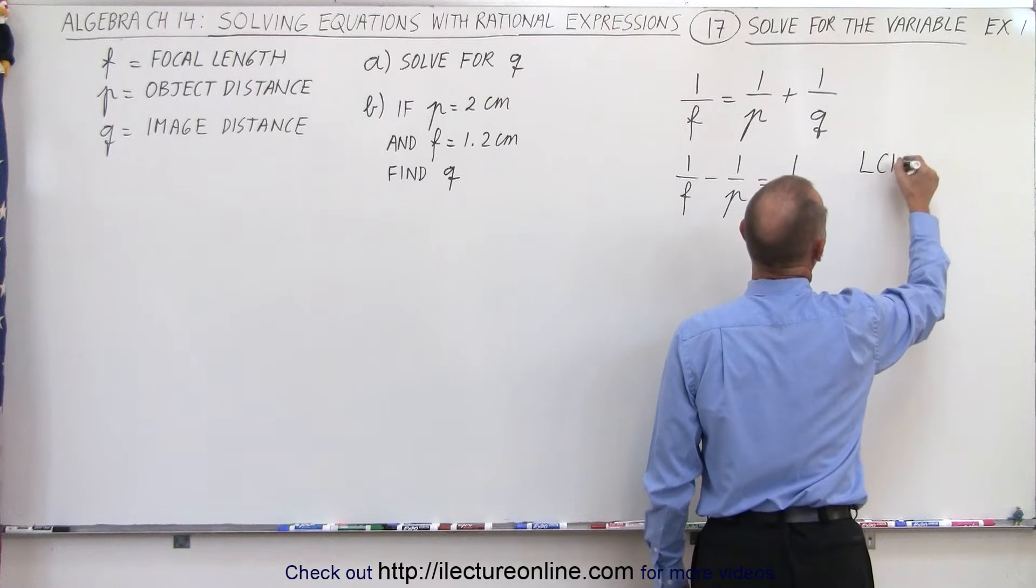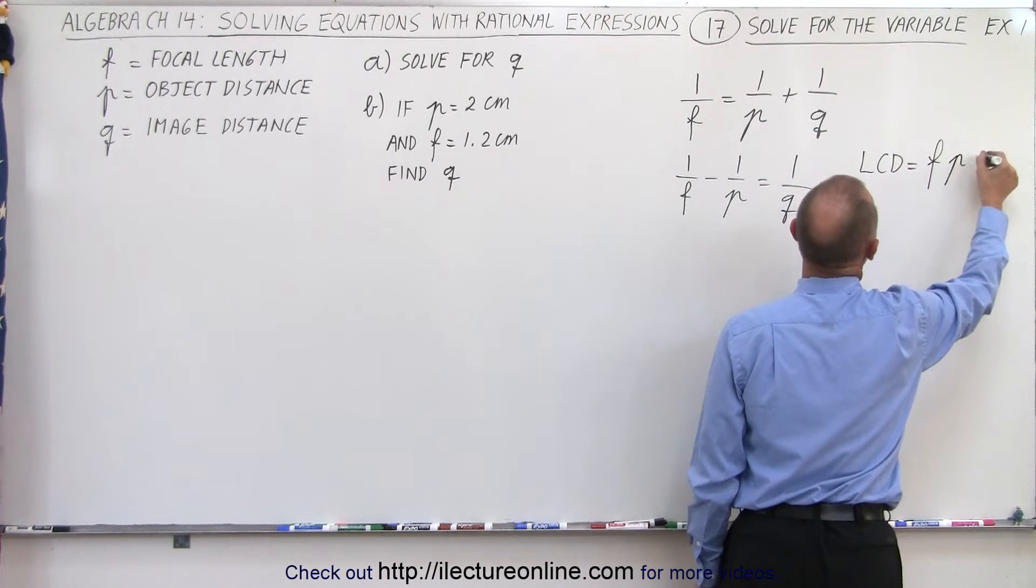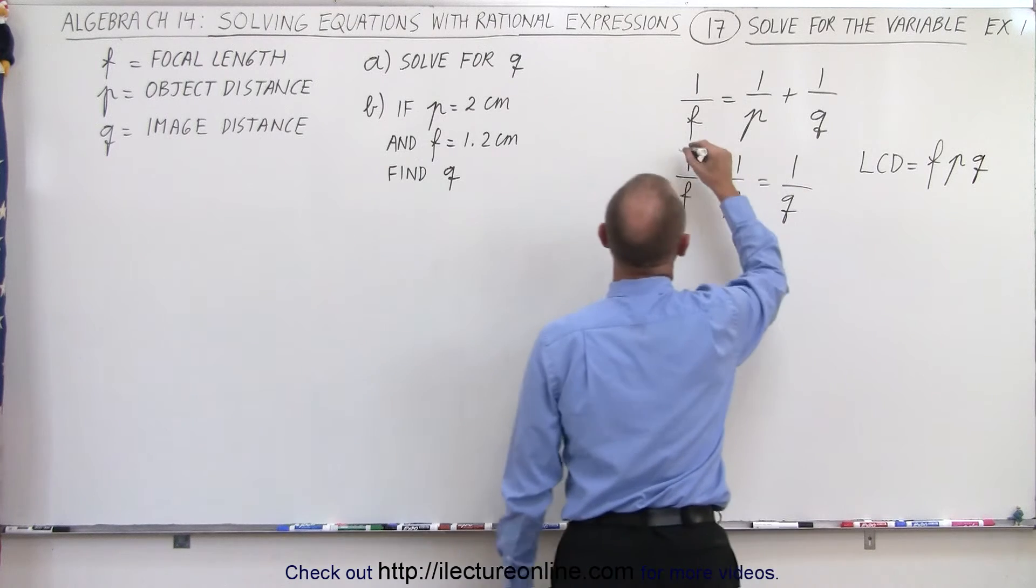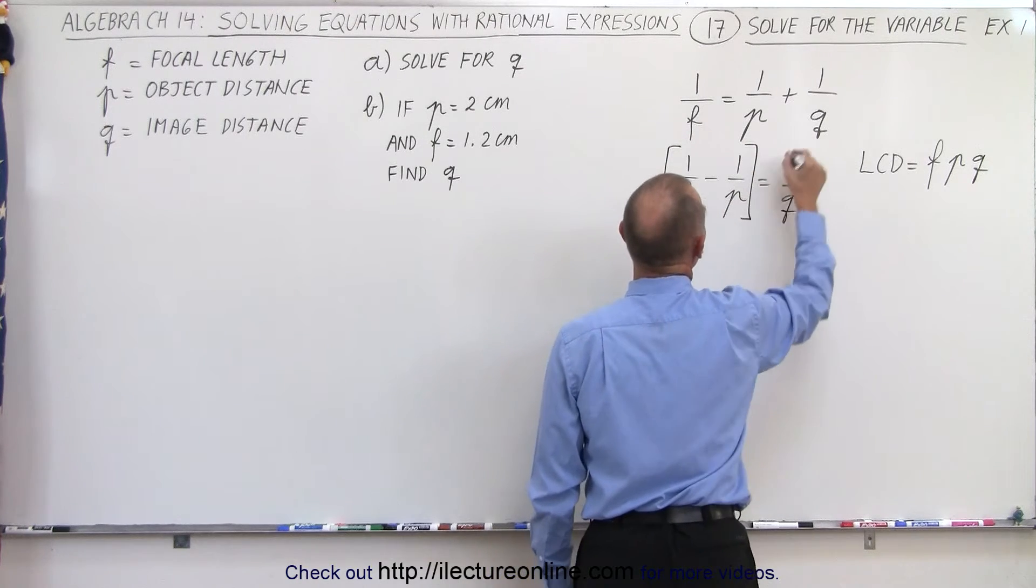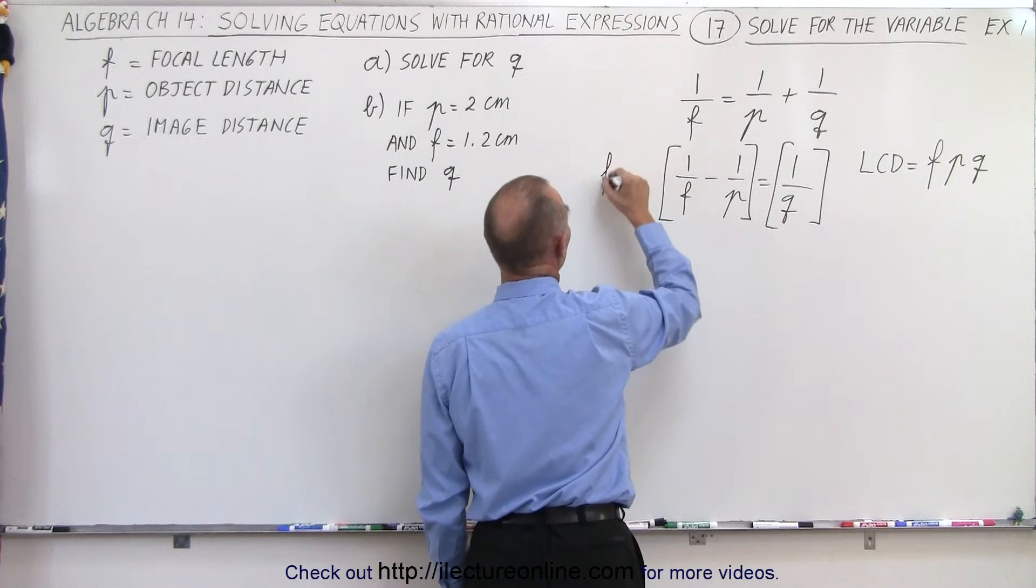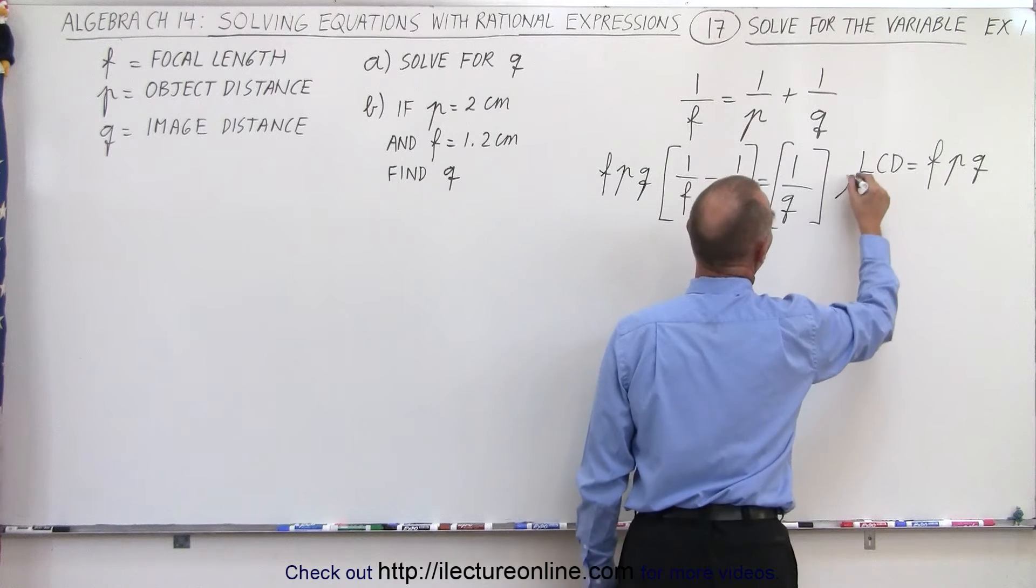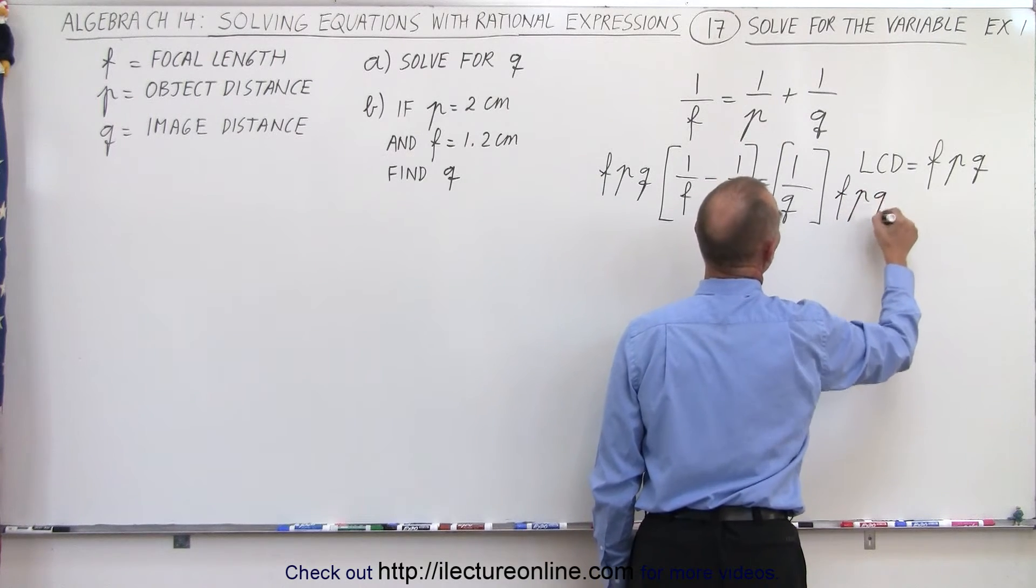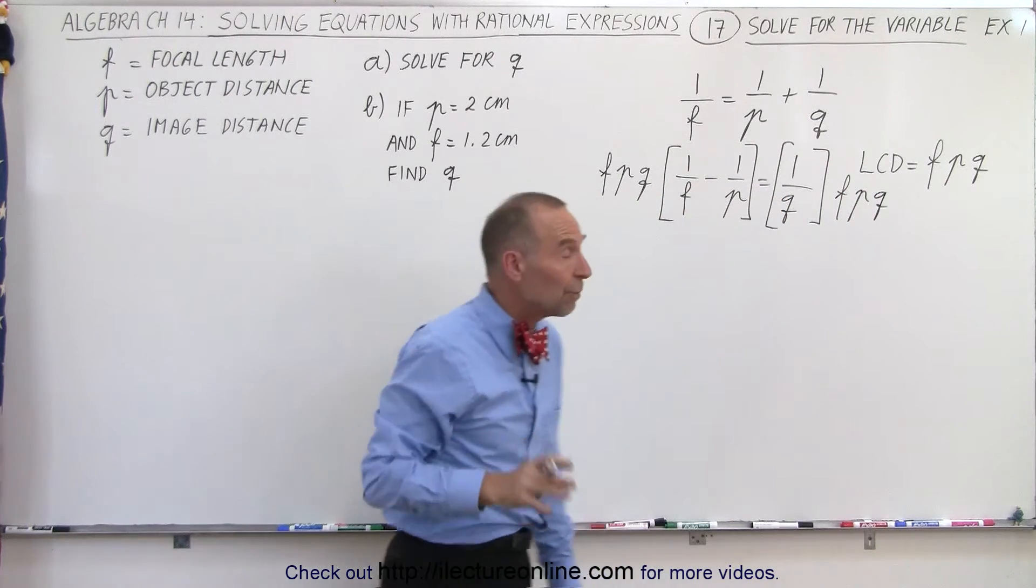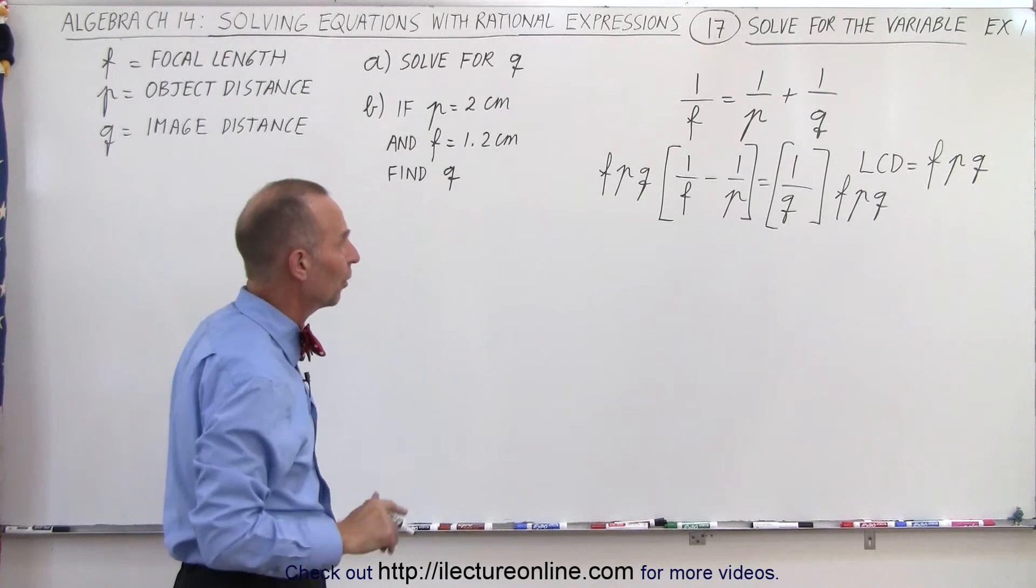We're going to take the lowest common denominator as being the product of F times P times Q, and multiply both sides of the equation by that lowest common denominator. So, multiply this by F, P, Q, and multiply this by F, P, Q. We're employing the same technique that we've used before. That works just fine. There's other techniques, but let's try this one.